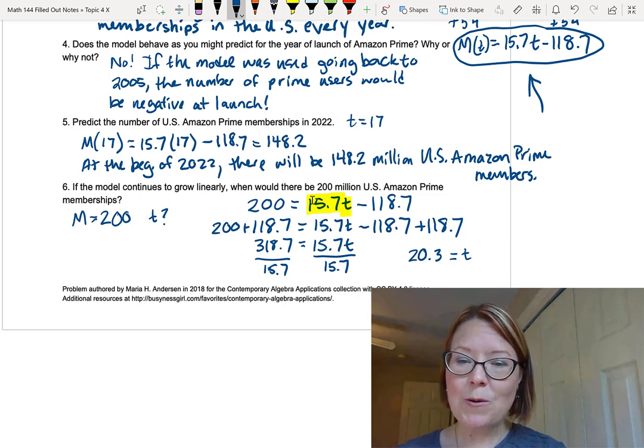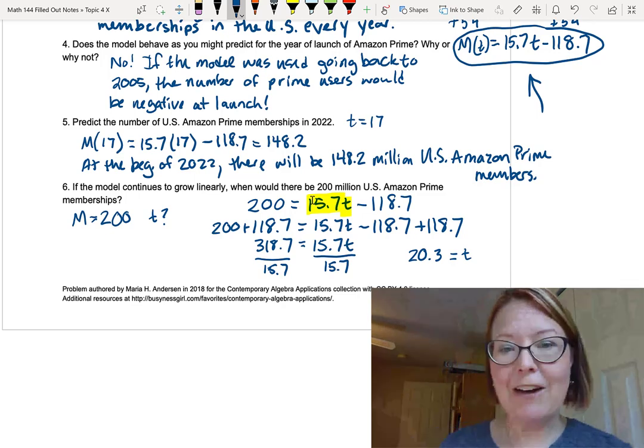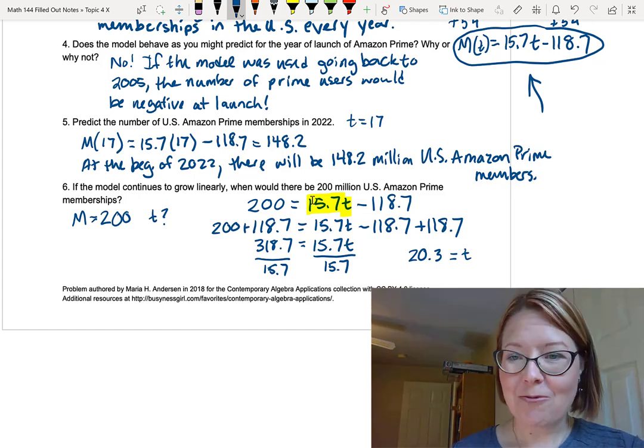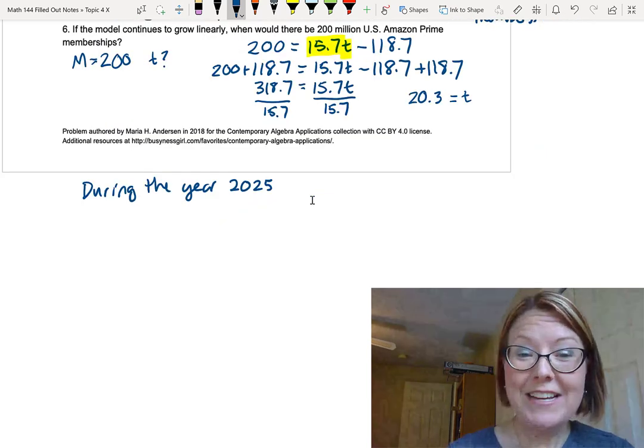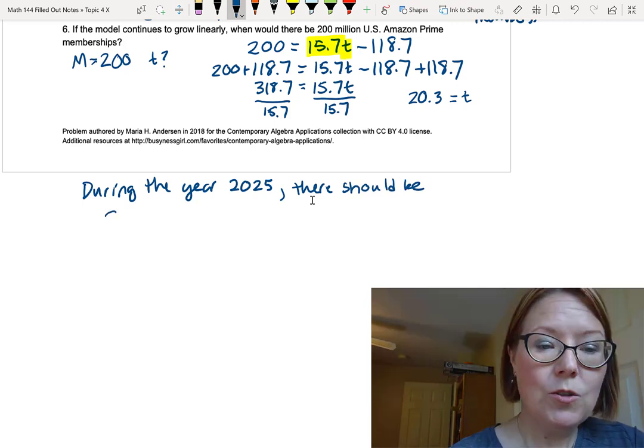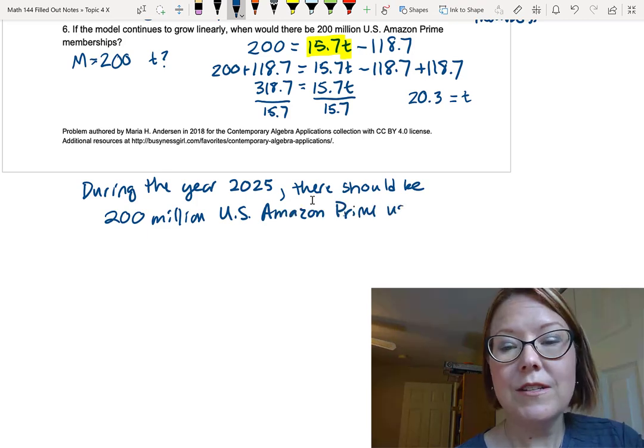t equals 20.3 would be what year? Well, that's 20.3 years after 2005. So that's a little bit of the ways through 2025. I'm going to summarize that for you. During the year 2025, there should be 200 million US Amazon Prime users. We're done.